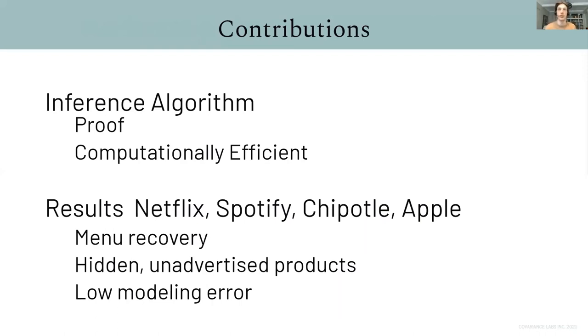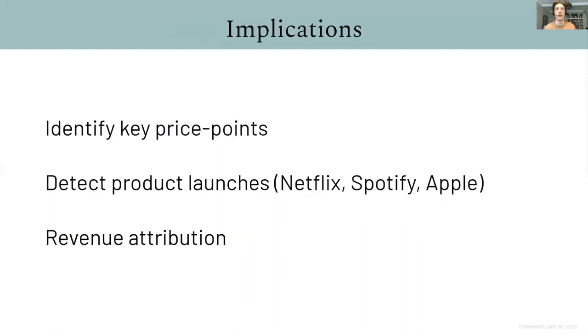Next, experimental results. We completely recover the price catalog of Netflix, finding unadvertised hidden products. And at Spotify and Apple, we can detect product launches automatically, detecting new price points, with the launch of products at existing price points, for example, seeing surges in buying at existing price points. And we're able to decompose bill totals into underlying products with very low error.